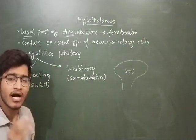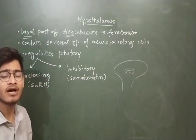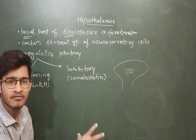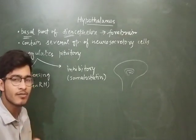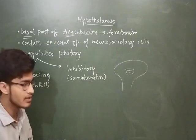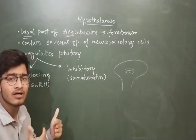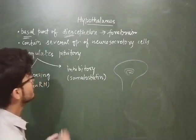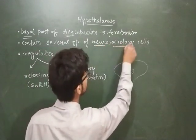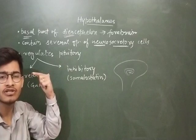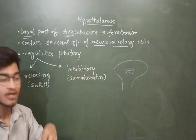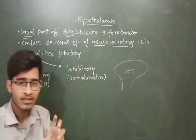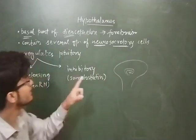Now, how does the hypothalamus synthesize different hormones? What are the secretory cells? Since hypothalamus is present at the basal part of diencephalon in the brain, it must have some sort of neurons. And when some brain cells are engaged in the function of secretion — of making some hormones — they are basically called as neurosecretory cells. Neuro means associated with the brain or neurons, and secretory means they are engaged with the process of secretion. So the hormones will be synthesized by the neurosecretory cells.